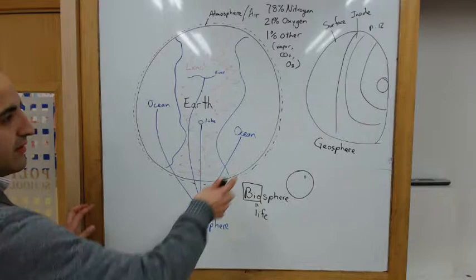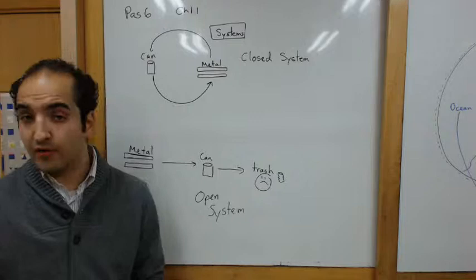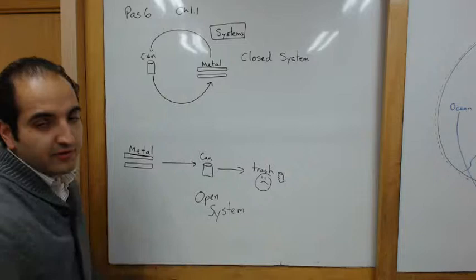And the important thing to know is that all of these systems are closed systems within our Earth. Everything that is made stays within the Earth. It does not leave the Earth. It does not disappear. It's just all within the Earth. All right, let's start. So then we're ready to open that chapter. Here we go.